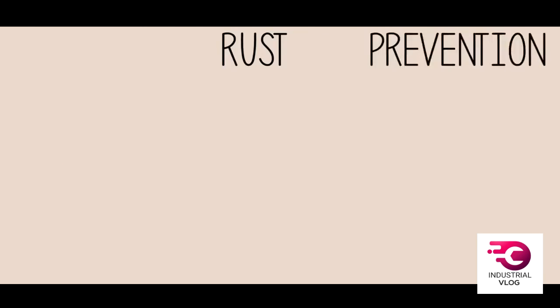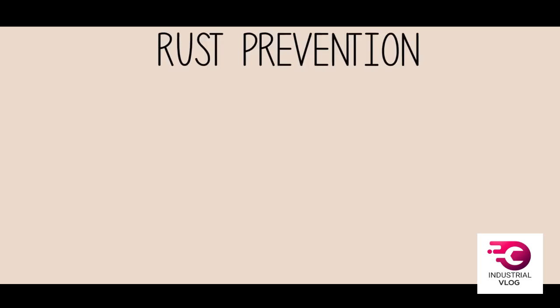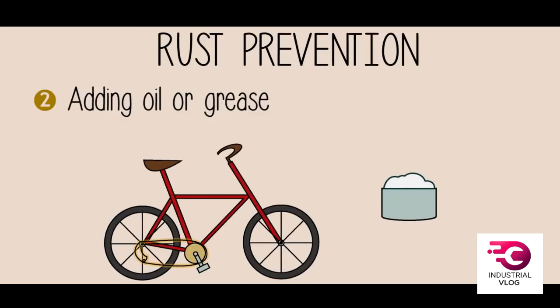Rust can be prevented if we paint the areas exposed to oxygen and moisture. This is done on many bicycles and cars. Another method to prevent rust is by placing a layer of oil or grease. This is done on many bicycle chains. It helps lubricate the moving parts, which reduces friction and slows down the rusting process.